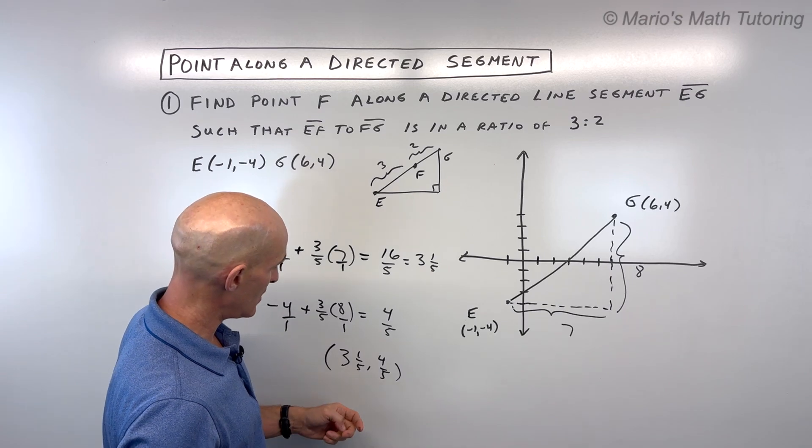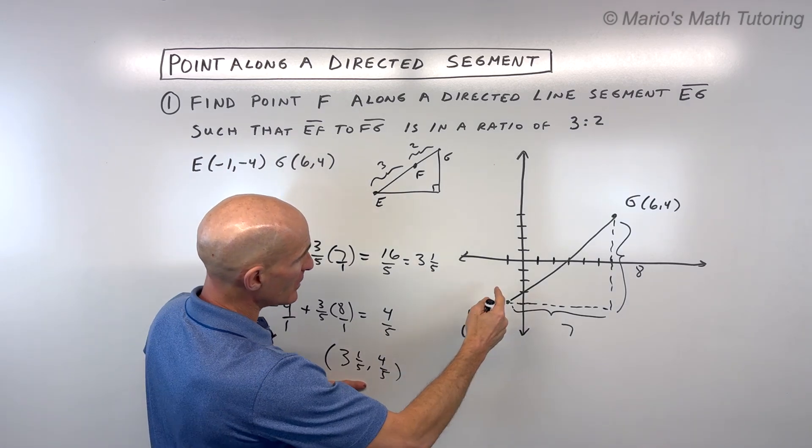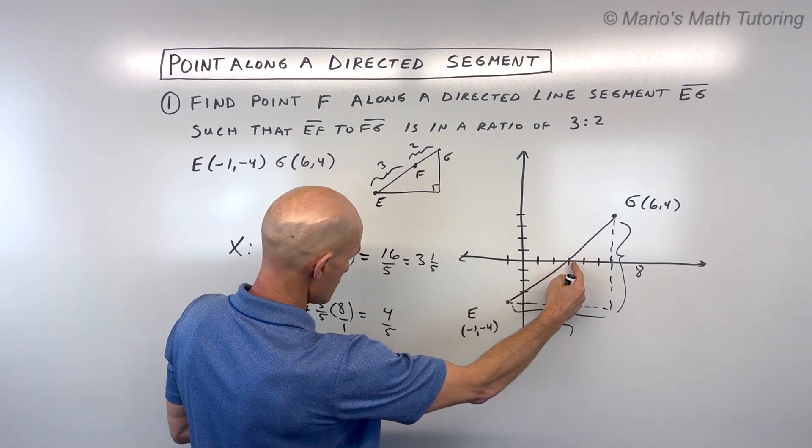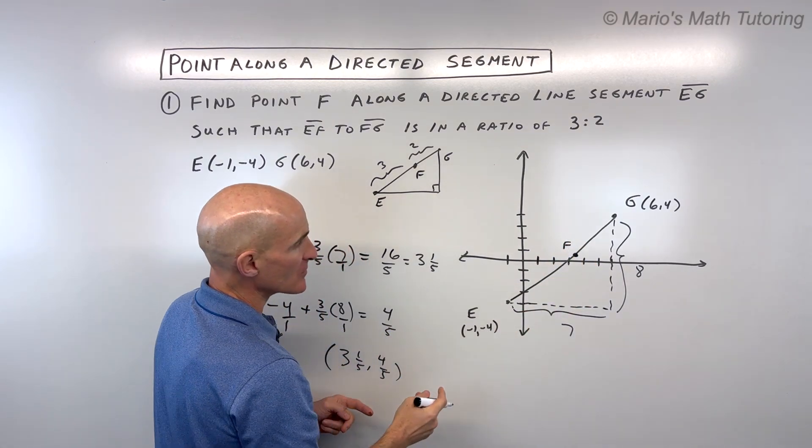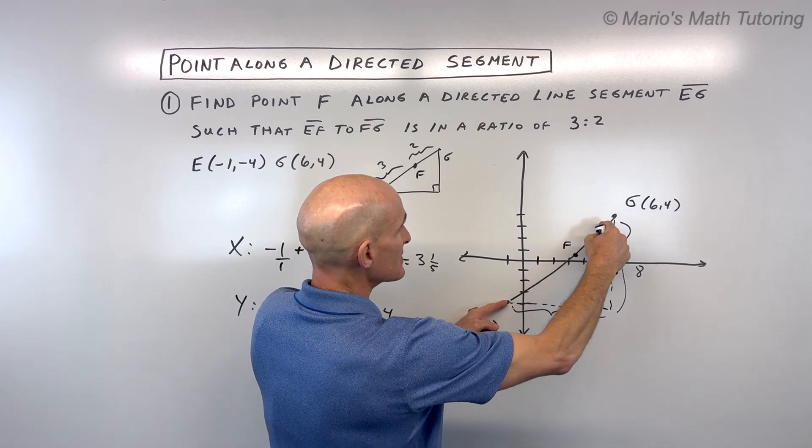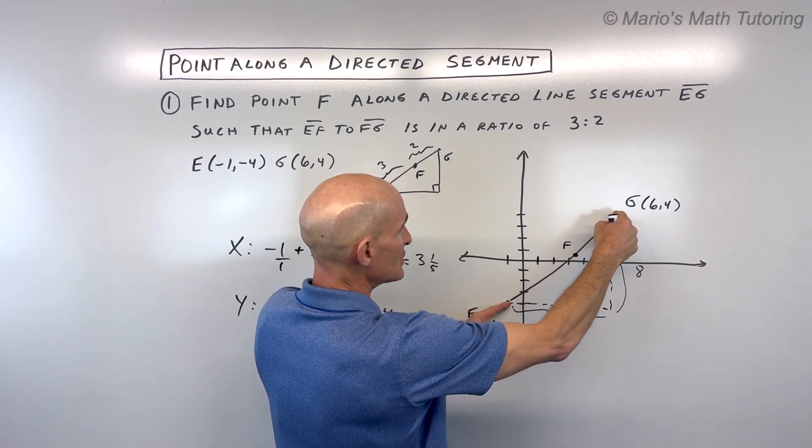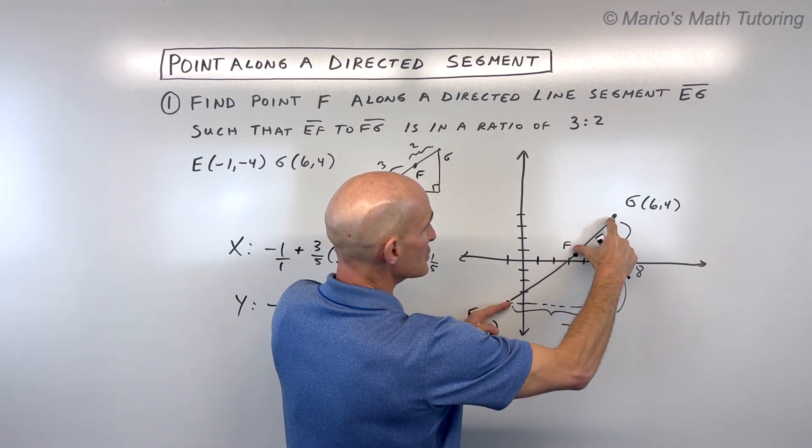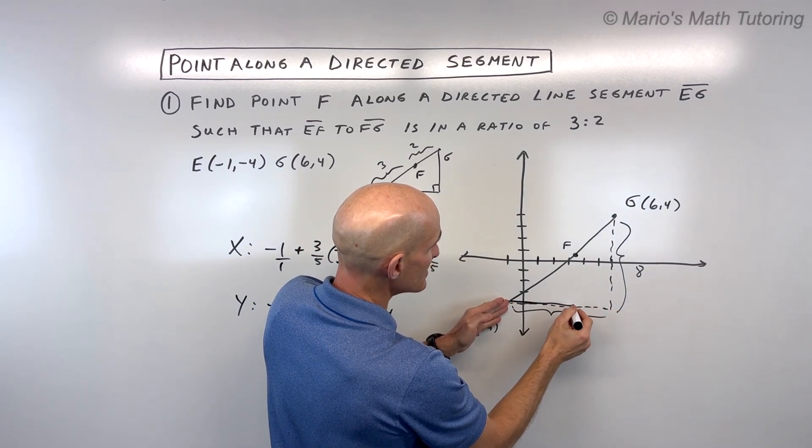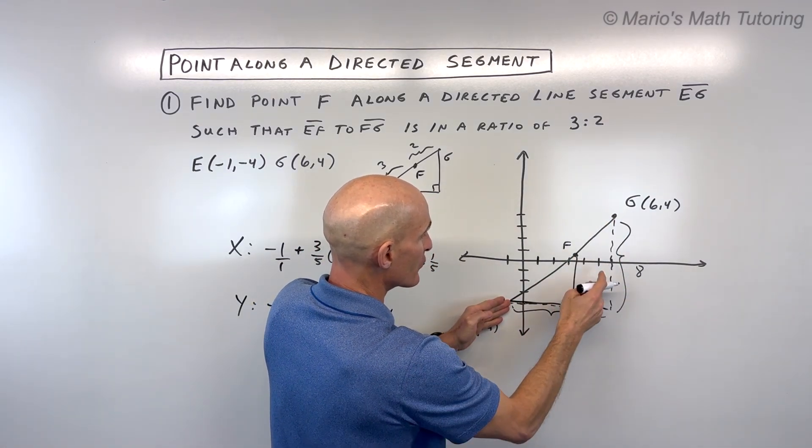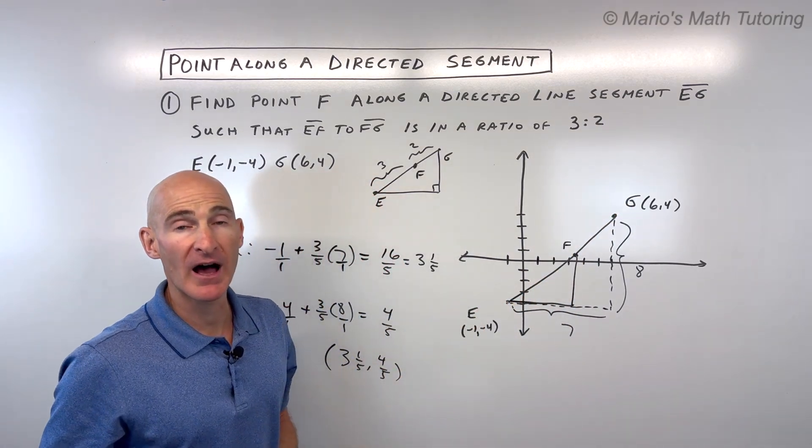Let's see if that makes sense in the context of this diagram here. So 3 and 1 fifth would be like right about here. Up 4 fifths would be right about here. So that's point F. So that basically divides this directed line segment from E to G in a 3 to 2 ratio, meaning we went three-fifths of this horizontal distance, then we went three-fifths of this vertical distance, and that's how we're finding that point right on the line.